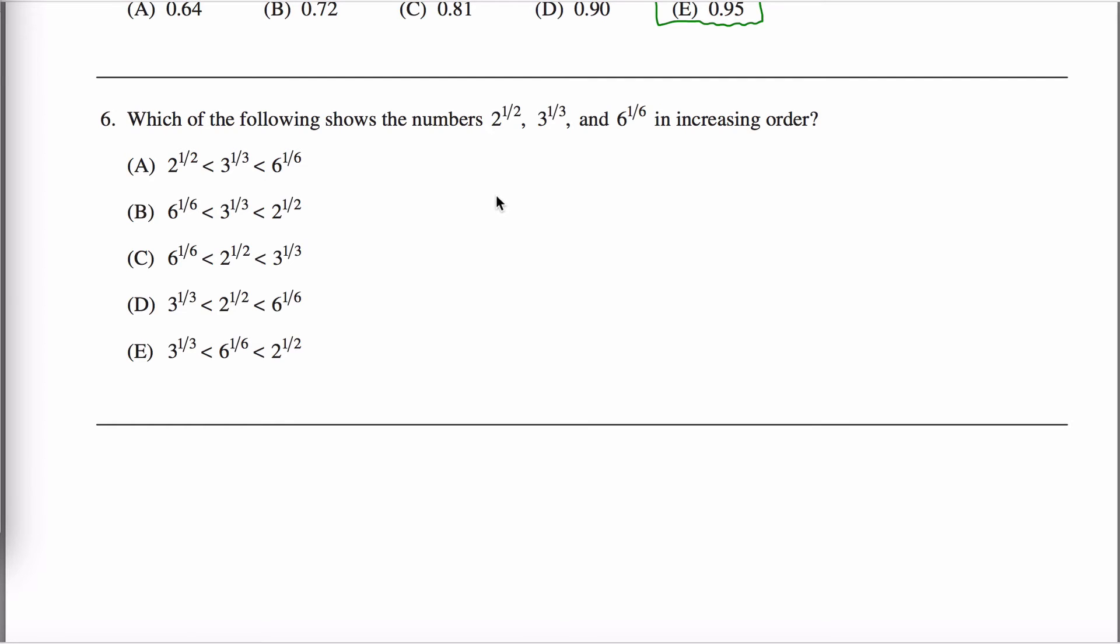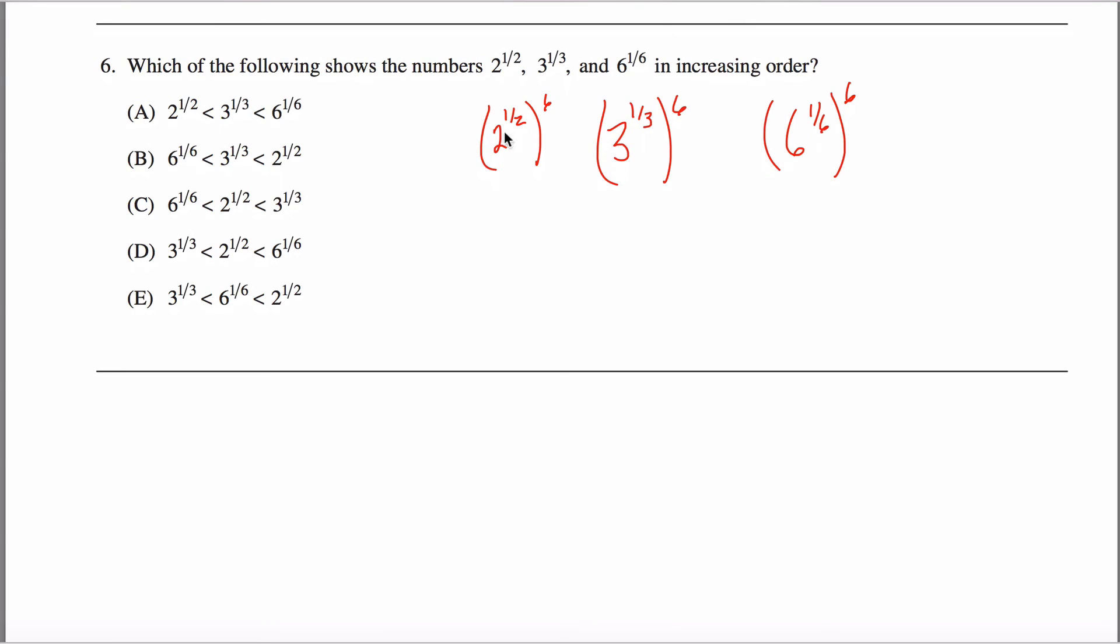So if I raise everything to the sixth power, I have two to the one-half to the sixth. I have three to the one-third to the sixth. And I have six to the one-sixth to the sixth. And you have these exponent rules that say when you have an exponent raised to another exponent, you multiply those exponents.